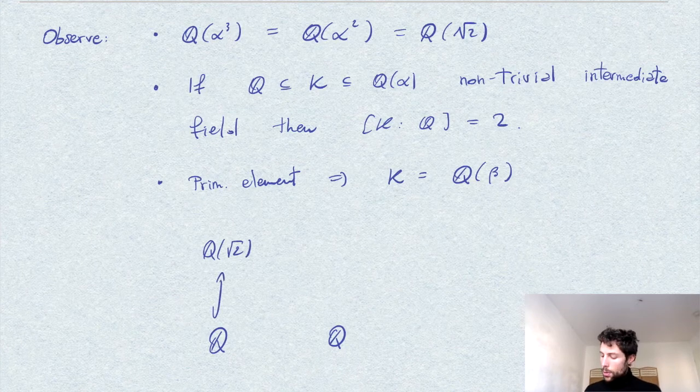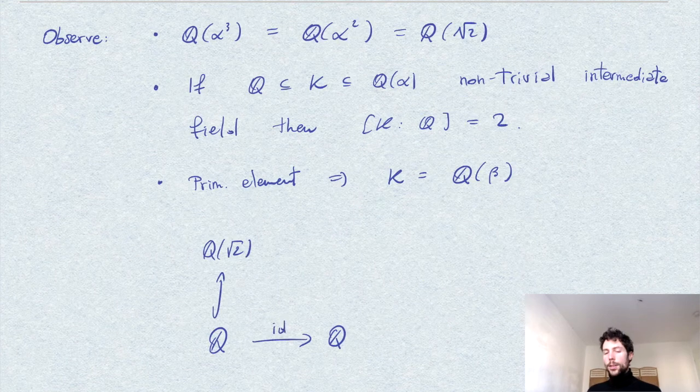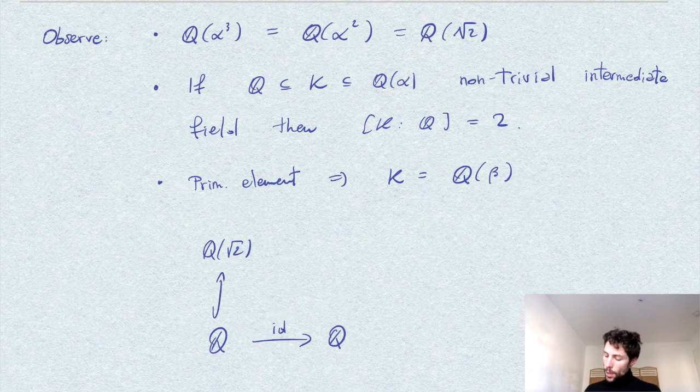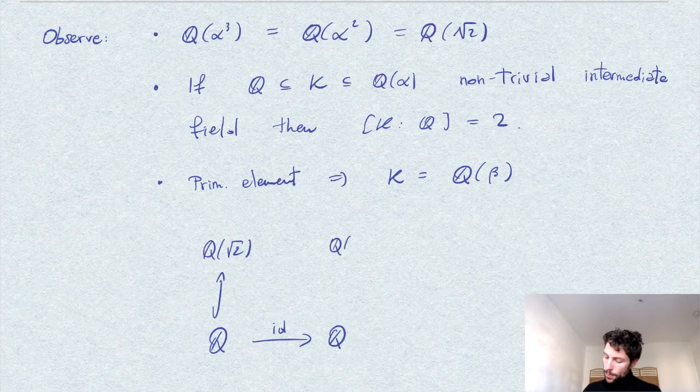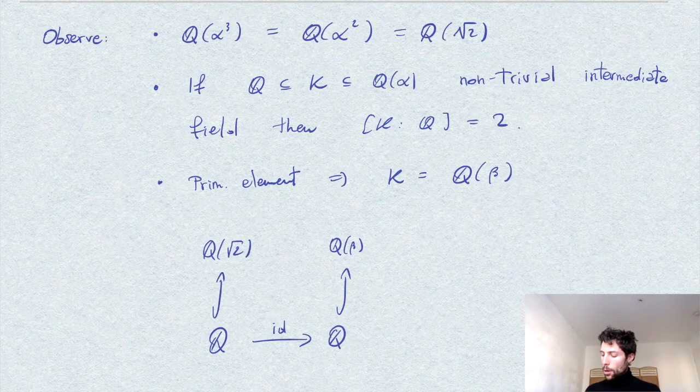So another extension of degree 2. These two above are isomorphic as vector spaces, and we can extend and close this diagram by an isomorphism that sends √2 to β.